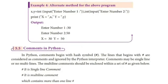Consider example 4: Alternate method for the above program. x, y equals int(input("Enter number 1")), int(input("Enter number 2")). In example 3, we studied x equals int(input("Enter number 1")) is one line, and y equals int(input("Enter number 2")) is in the next line. But in this example, x, y - two variables are assigned in the same line. Print "X =", x, "Y =", y. Output is: Enter number 1: 30, Enter number 2: 50. Answer will be printed: X = 30, Y = 50.